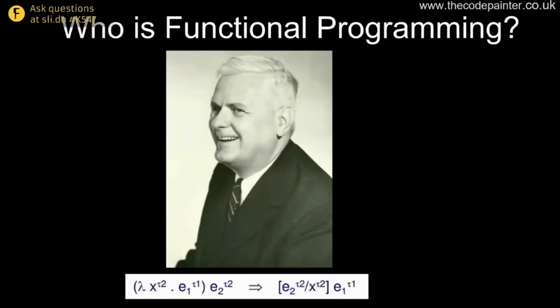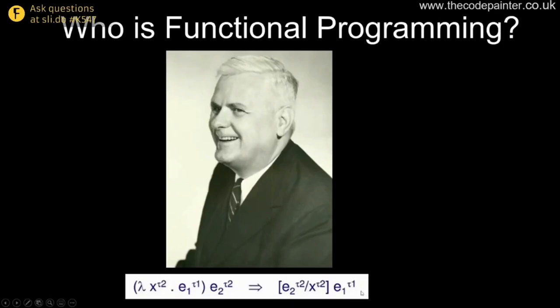I'll introduce three people significant to the history of functional programming — one of these is a software developer, see if you can guess which. This first gentleman is Alonzo Church, significant for a few reasons. For us as developers, there's the arrow function — though this is from an old math paper from the 1950s. The second is the Greek letter lambda, and this is where we get the term lambda expression.